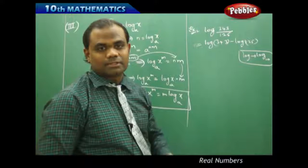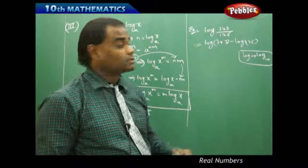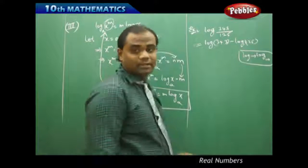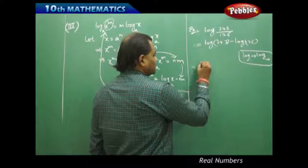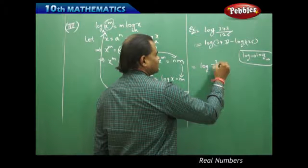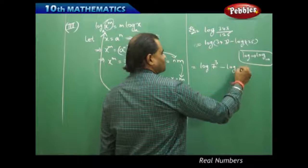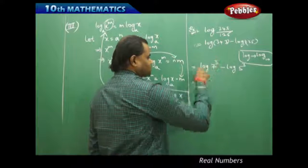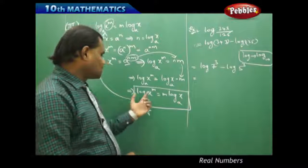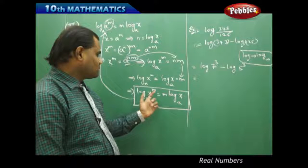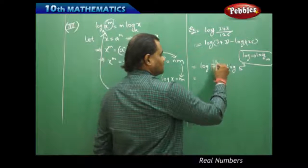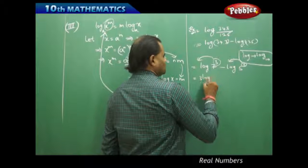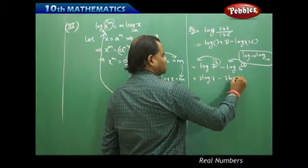We don't need to put the base — it is indirectly assumed as base 10. So this being log 343 to base 10 minus log 125 to base 10, can further be simplified because 343 can be written as 7 cubed, minus log 125 which can be written as 5 cubed. Using the third law of logarithm, log x^m equals m log x, therefore this m comes out: 3 log 7 minus 3 log 5.